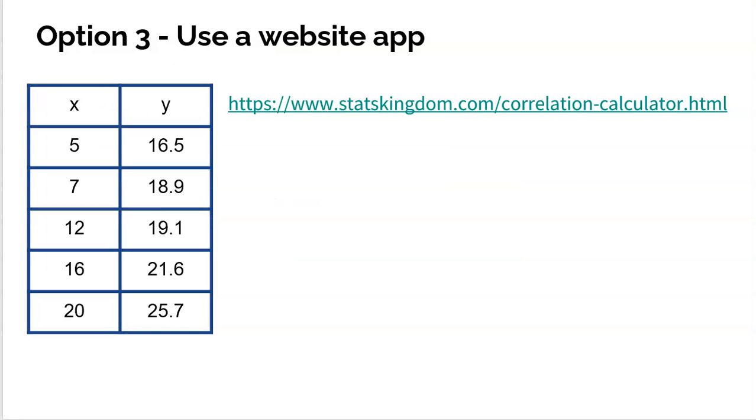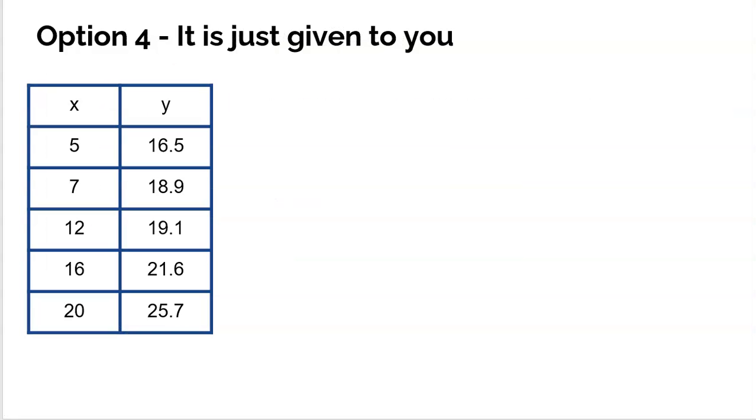Now there is a fourth option, a fourth way is that it's just given to you. And a lot of times on a test, on a quiz, on a worksheet, instead of making you waste your time to find R and maybe even doing it wrong, sometimes we'll just give it to you, right? So, you know, in a nice world, maybe I'll just tell you, hey, here's R, 0.9471. So that would be even better, right?